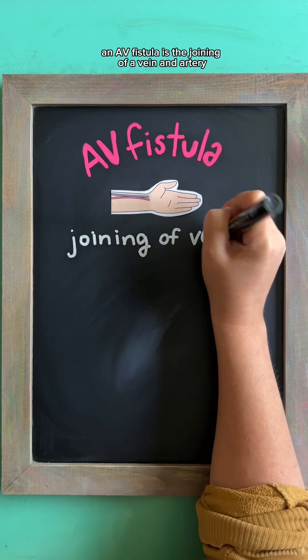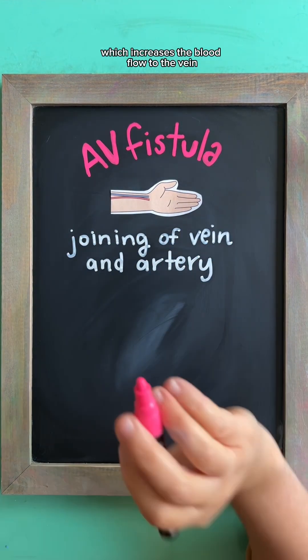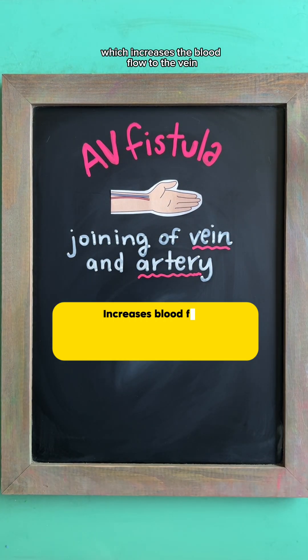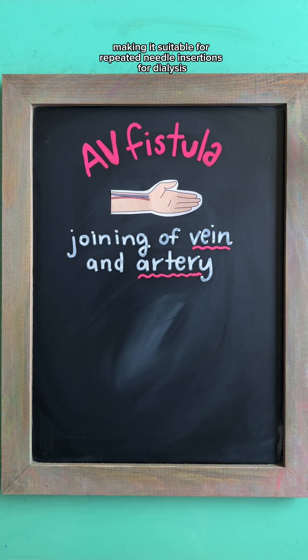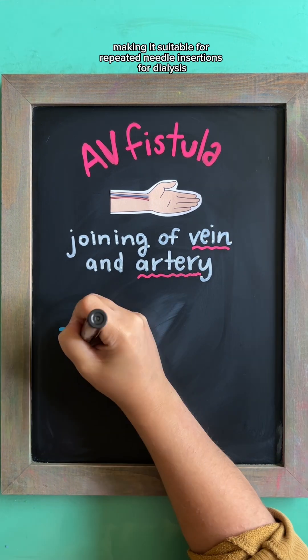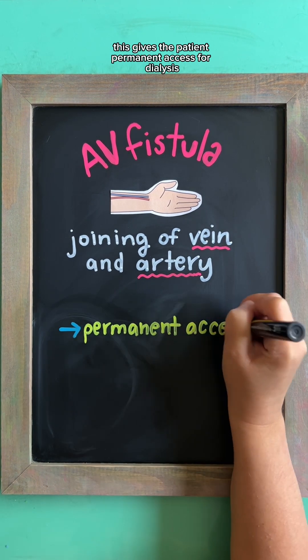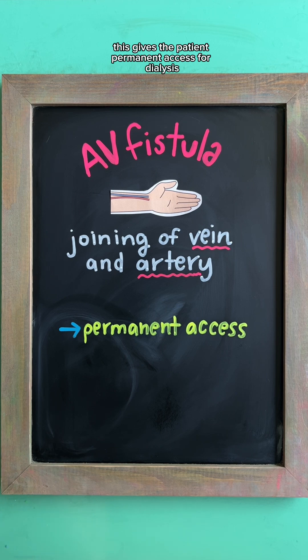An AV fistula is the joining of a vein and artery, which increases the blood flow to the vein, making it larger and stronger over time, making it suitable for repeated needle insertions for dialysis. This gives the patient permanent access for dialysis without needing an IV.